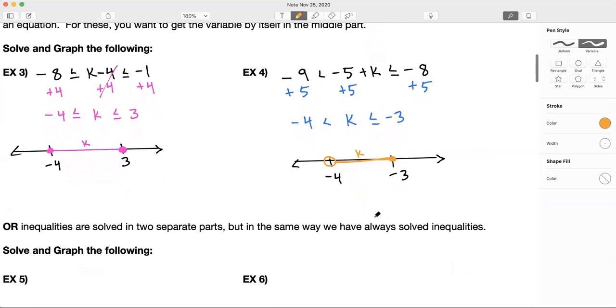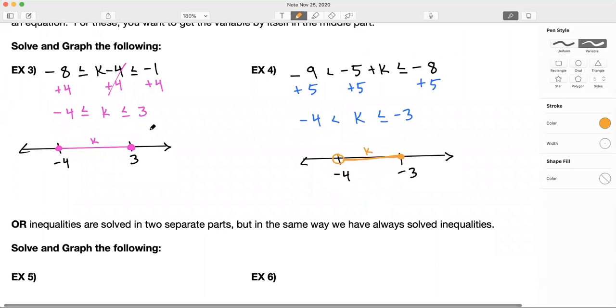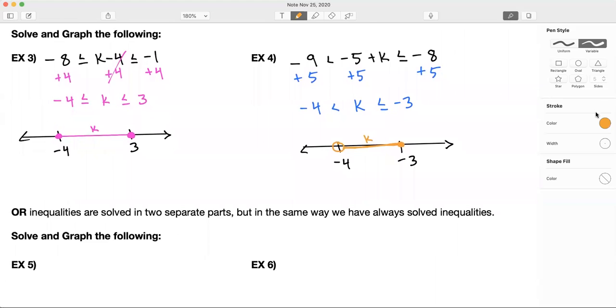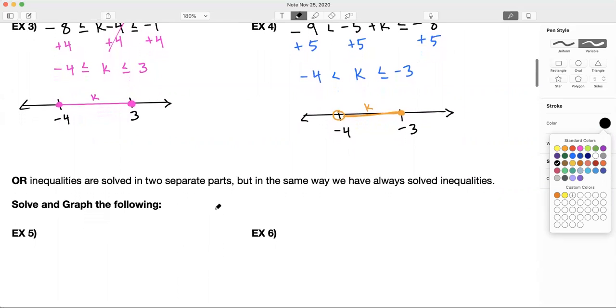Let's move on. We did two examples of both inequalities. Now we're going to do a couple examples of or inequalities and we'll be done. Or inequalities are solved in two separate parts, but those two parts are solved in the same exact way we have solved inequalities already up to this point.